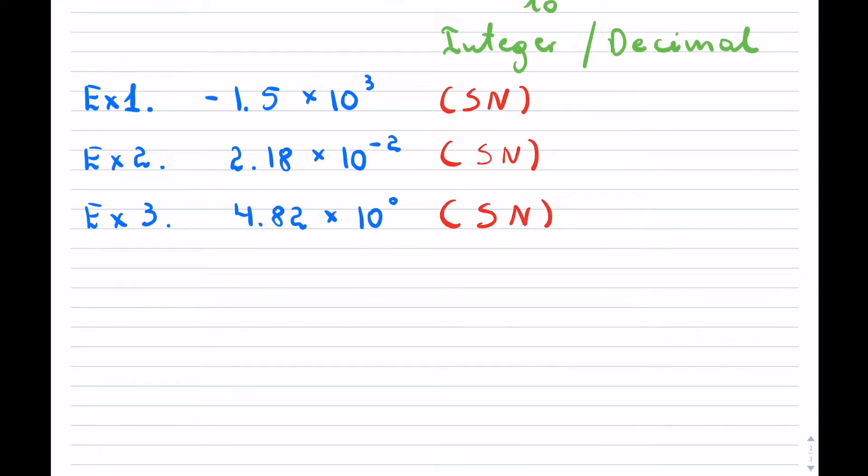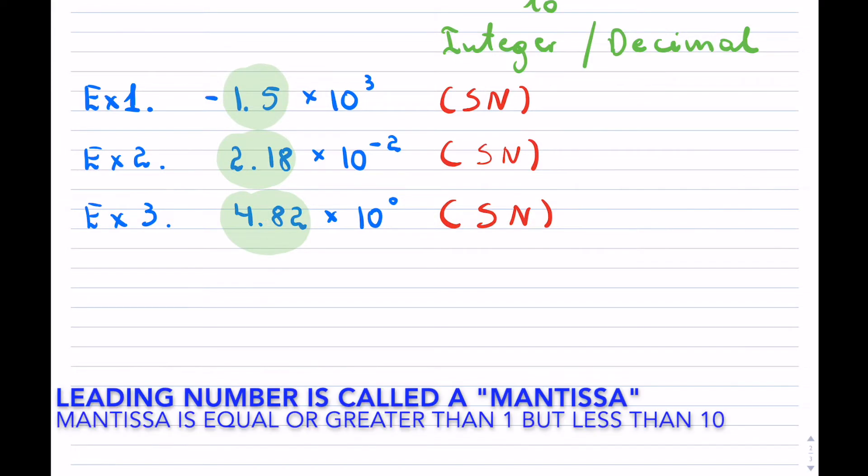So what makes them be in scientific notation is that all of them, as you can see—now it doesn't matter if they're negative or positive—are between 1 and 10.